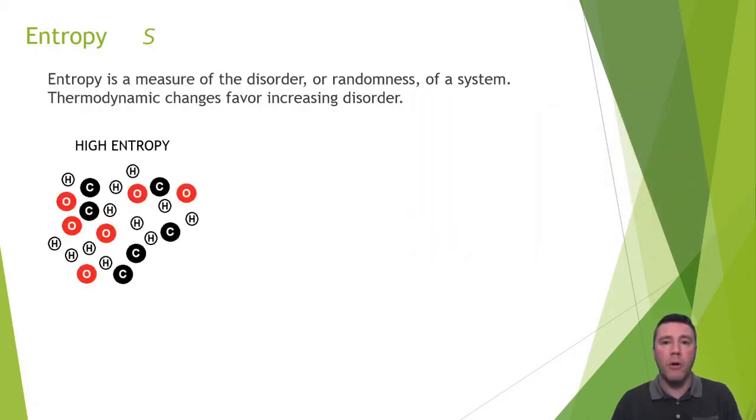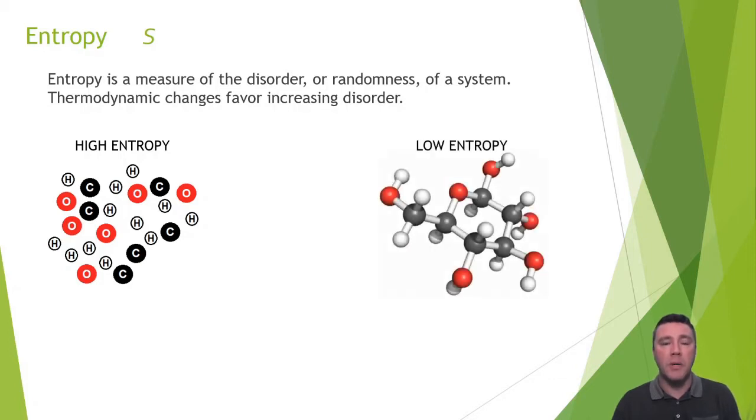This collection of carbon, hydrogen, and oxygen atoms has a relatively higher entropy than the specifically constructed glucose molecule that those atoms could be used to make. So transitioning from the high entropy pile of atoms to the low entropy glucose molecule would result in a decrease in entropy, negative delta S. Conversely, deconstructing the glucose would result in an increase in entropy, positive delta S.